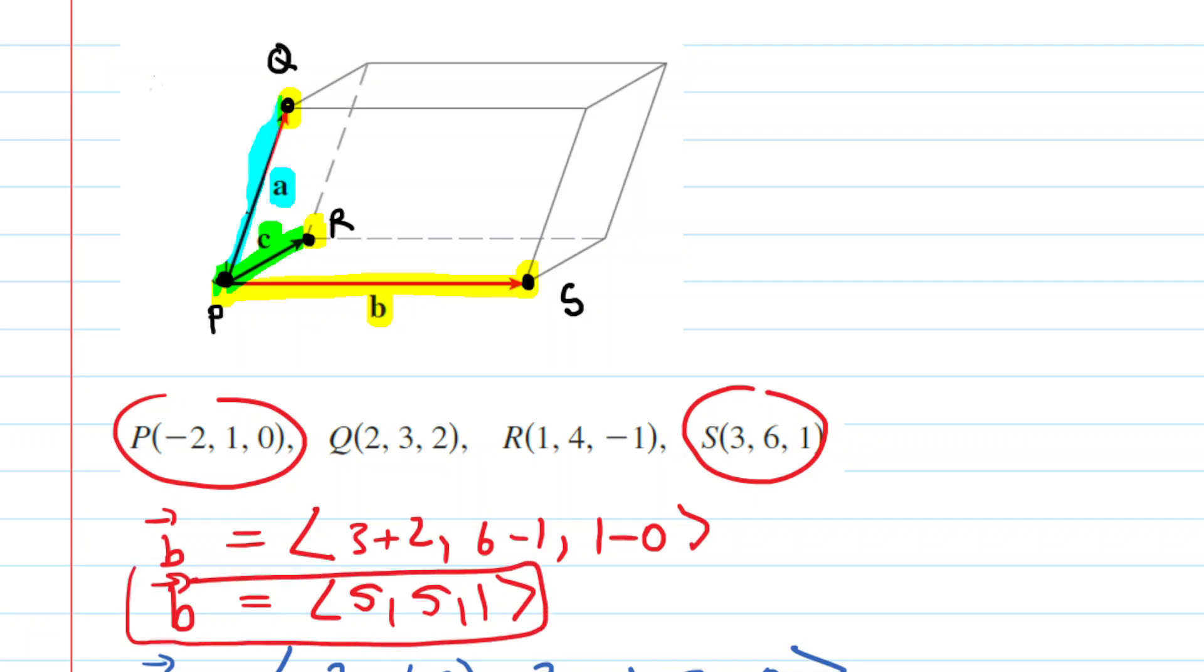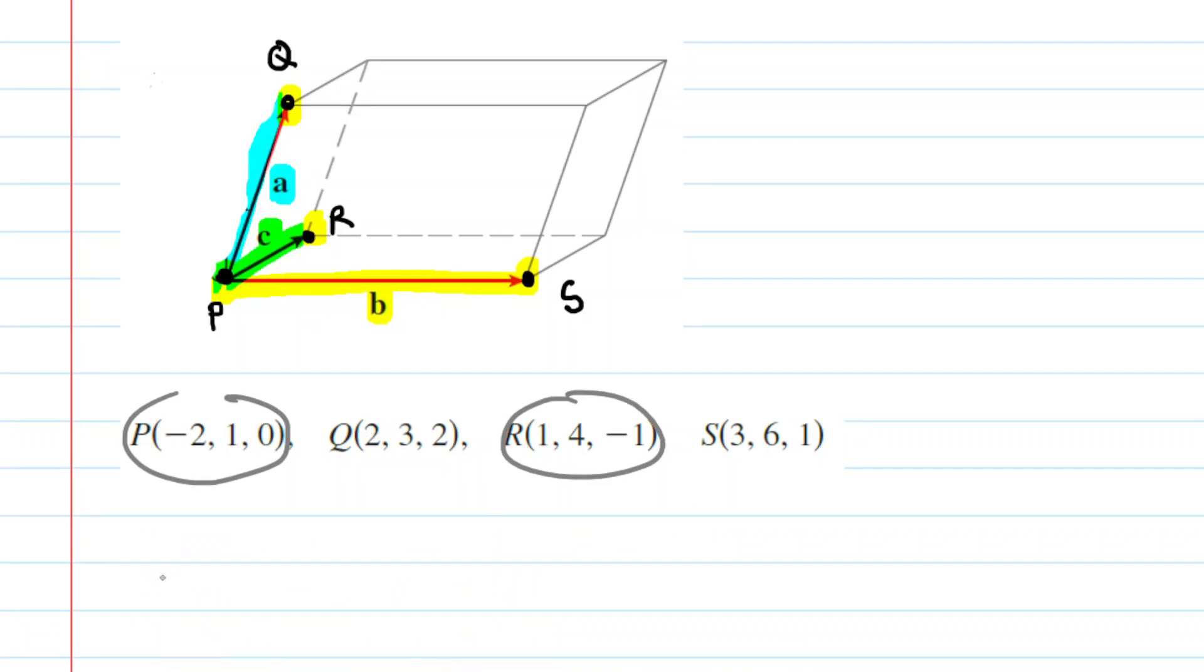So that's great. We're going to put a box around that. And now we need to take a look at vector C. Vector C is formed by joining points P to point R. So let's calculate vector C. We'll take the terminal point and subtract the initial point. So we'll start with R, and then we have 1 minus negative 2 or 1 plus 2 for the x-coordinates, and then we have 4 minus 1 for the y, and then negative 1 minus 0. We'll go ahead and simplify this. We can see vector C is equal to 3, 3, and negative 1.